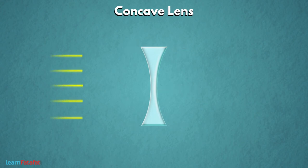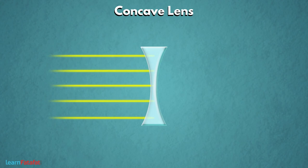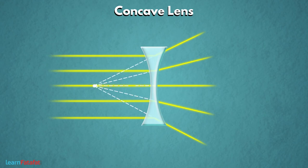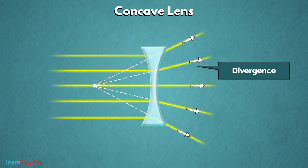अगर इस पर parallel rays incident होती हैं तो इसमें से pass होने पर ये rays एक point पर नहीं meet होतीं. ऐसा लगता है जैसे ये एक point से diverge हो रही हैं यानी spread हो रही हैं. The spreading of rays from one point to different directions is called divergence.